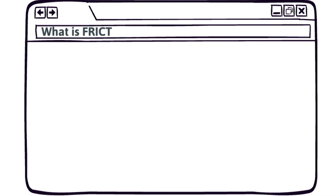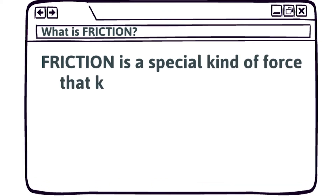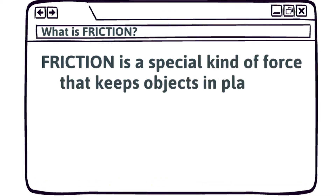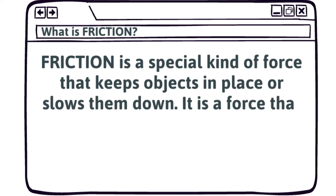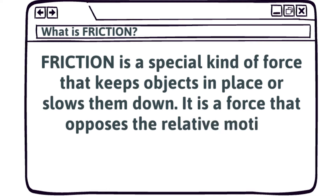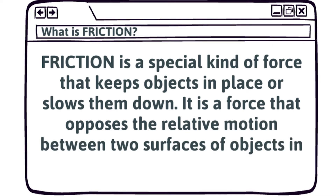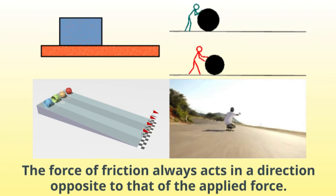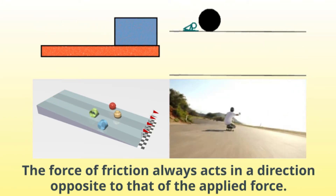What is friction? Friction is a special kind of force that keeps objects in place or slows them down. It is a force that opposes the relative motion between two surfaces of objects in contact. The force of friction always acts in a direction opposite to that of the applied force.